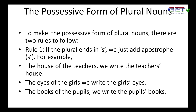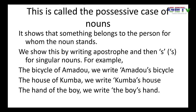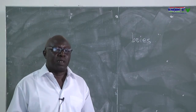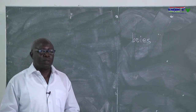To make the possessive form of plural nouns, there are two rules to follow. We said we put apostrophe and then S for singular nouns — it is not the same case for plural nouns. Rule one: if the plural ends in S, we just add apostrophe. For example, the house of the teachers — we write the teachers' house. Here we're not talking about one teacher, we're talking of teachers. Teachers ends with S, so we just write the plural form already and add an apostrophe there — so it becomes the teachers' house.